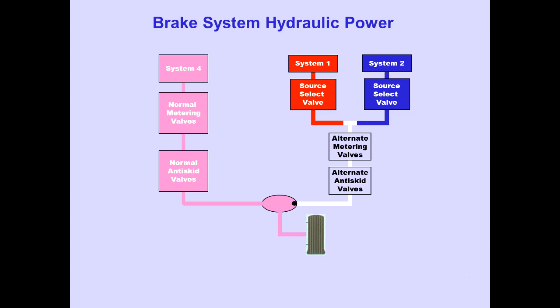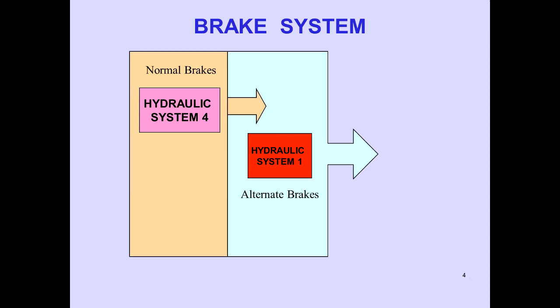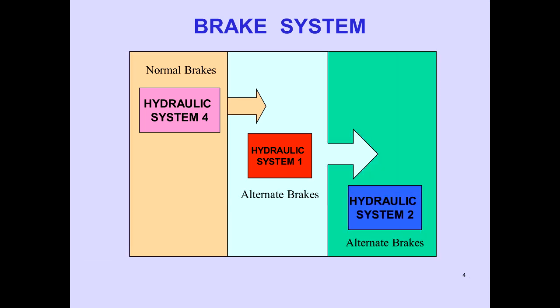Recall that normal brakes are powered by hydraulic system 4, and alternate brakes by hydraulic systems 1 and 2. The hydraulic brake source transfers automatically from normal brakes to the alternate brakes powered by hydraulic system 1, and then hydraulic system 2, as pressure is lost in each system.